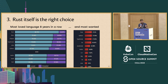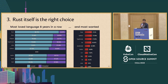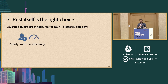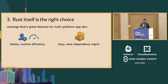22% of people want to use Rust, compared to only 14% for Python — factoring out folks already using Rust. The point is, it has quite a following. We'd like to leverage a lot of great features from the Rust world for multi-platform application development: safety, which can lead to runtime efficiency without worrying about garbage collection. We all love Cargo — it offers easy, clear dependency management.